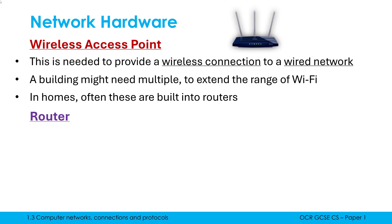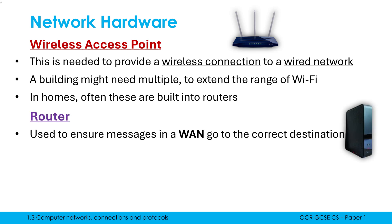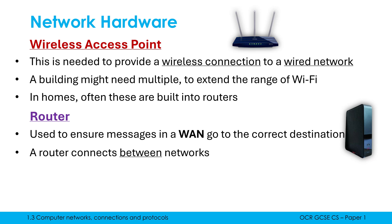Speaking of routers, they often look like this, especially in a home. A router is there to ensure that messages in a WAN go to the correct destination. If you only ever communicate within your LAN, a router isn't needed — a router is only needed once you connect to a WAN, because a router connects between networks. Once you join your LAN to the internet, or join one LAN to another, you need a router.